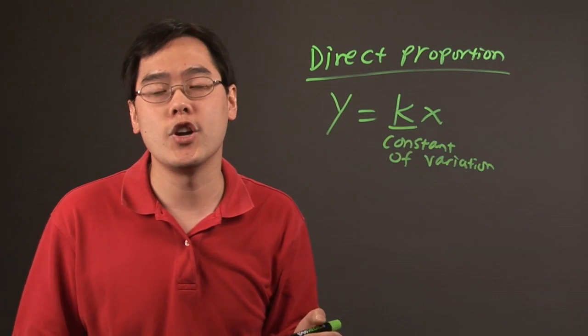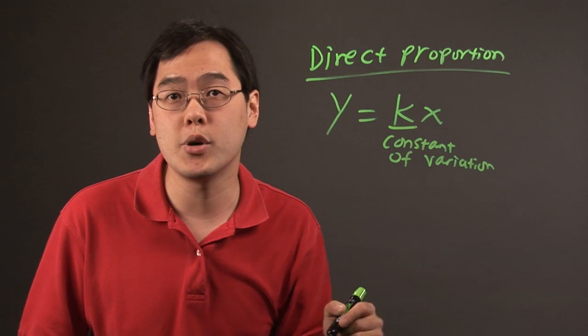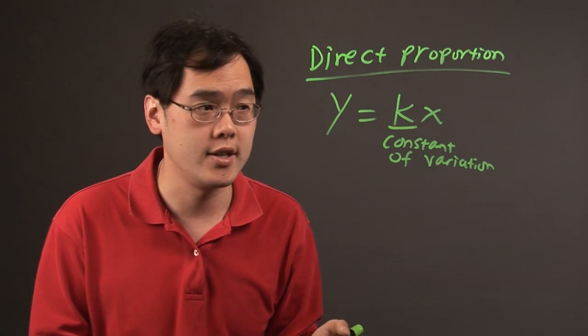What makes this a direct proportion ratio is that the ratio of the two variables is going to be constant. Here's how to illustrate that.